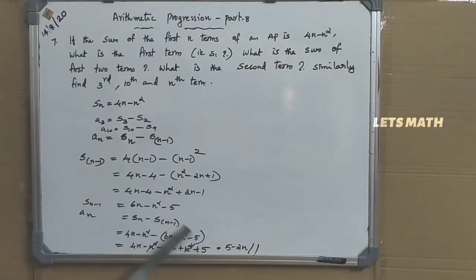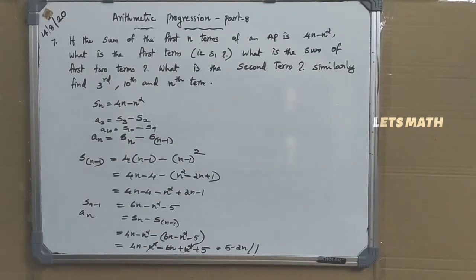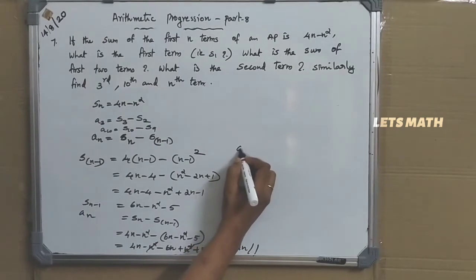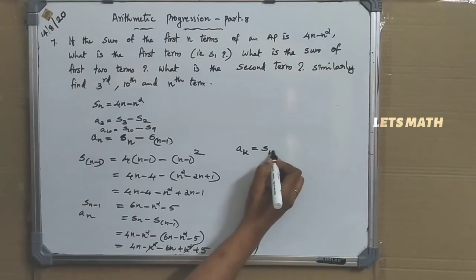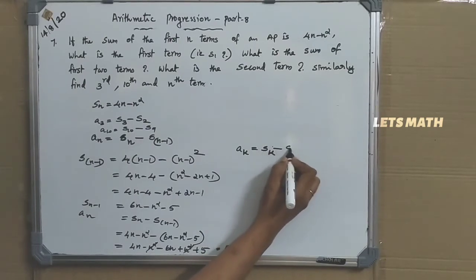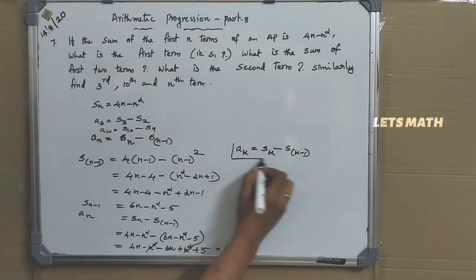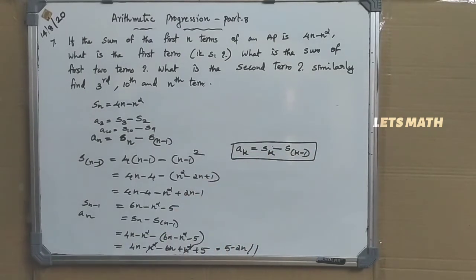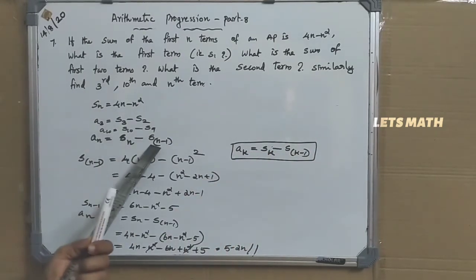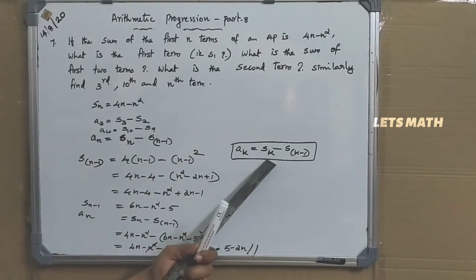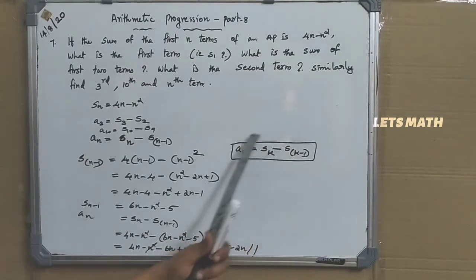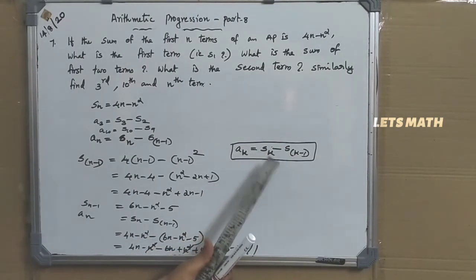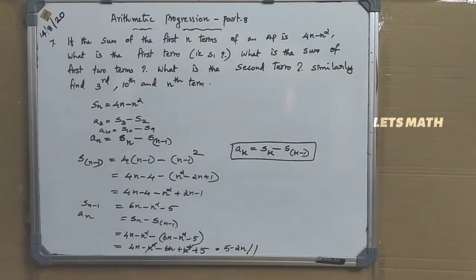Generally, we can say AK equals SK minus SK minus 1. You can just remember this formula because it will help you answer MCQ questions.